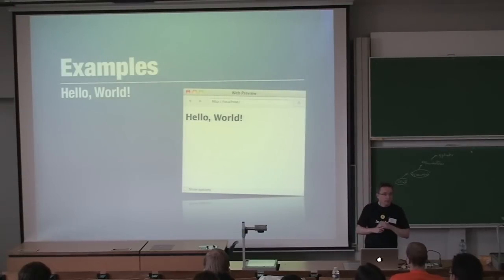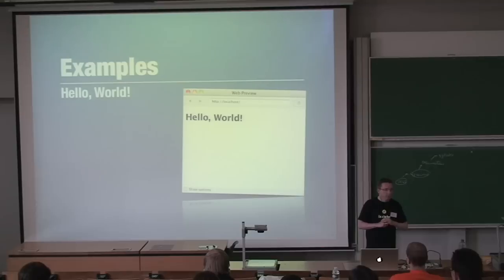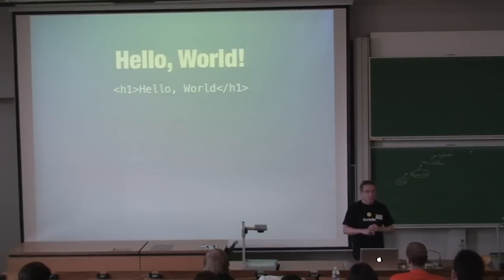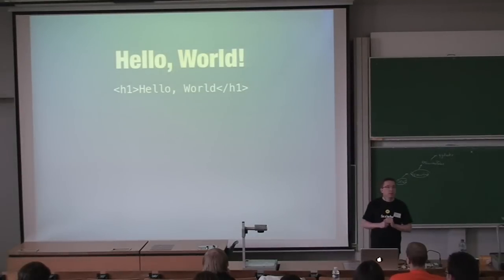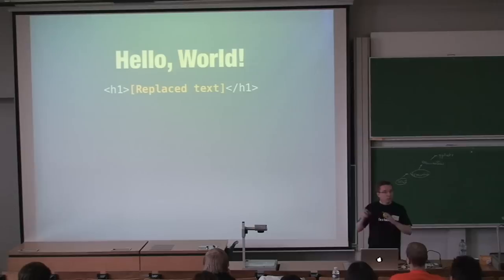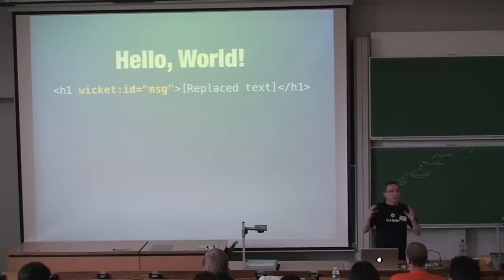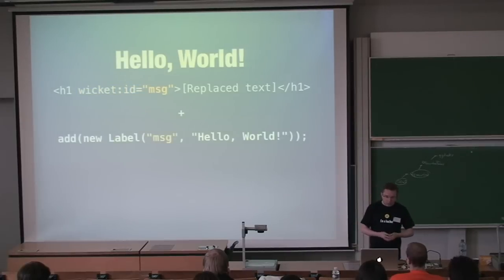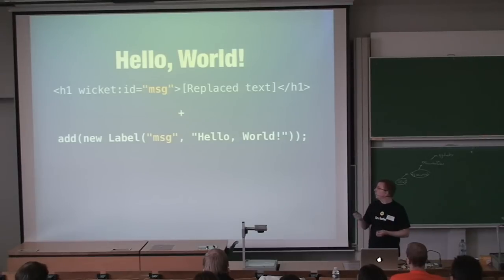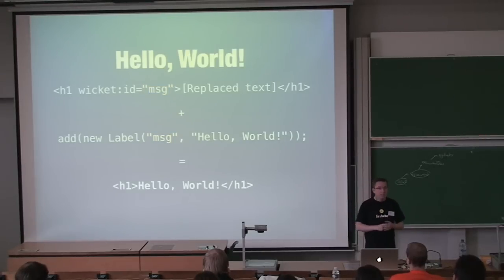Some quick examples — first, Hello World. To display 'Hello World' text, we create markup displaying it, then add a Wicket component identifier to the tag we want to replace. In Java code, we add a Label to the page with the same component identifier and the text 'Hello World.' And voilà, it renders Hello World.